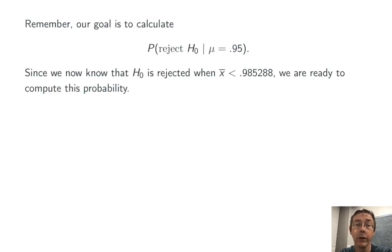Now, of course, our goal here was to calculate the probability of rejecting H₀ under the circumstance where the true population mean was 0.95. Now we know the circumstances specifically under which the null hypothesis is rejected when we get a sample mean less than 0.985288.